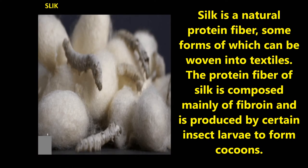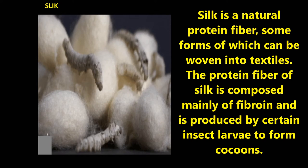Now let us discuss about silk. Silk is a natural protein fiber, some forms of which can be woven into textiles. The protein fiber of silk is composed mainly of fibroin, and it is produced by certain insect larvae to form cocoons.